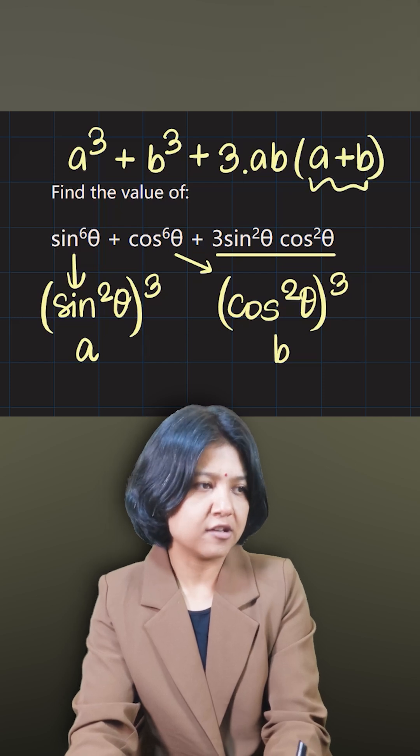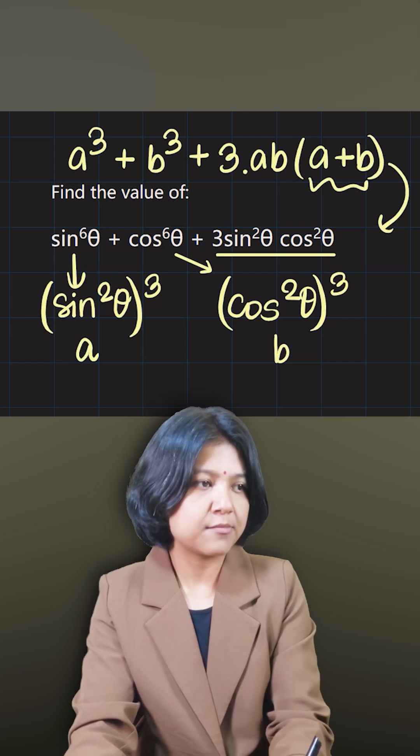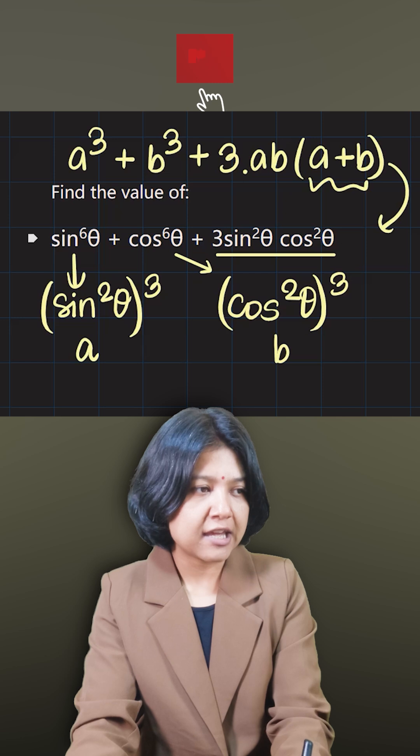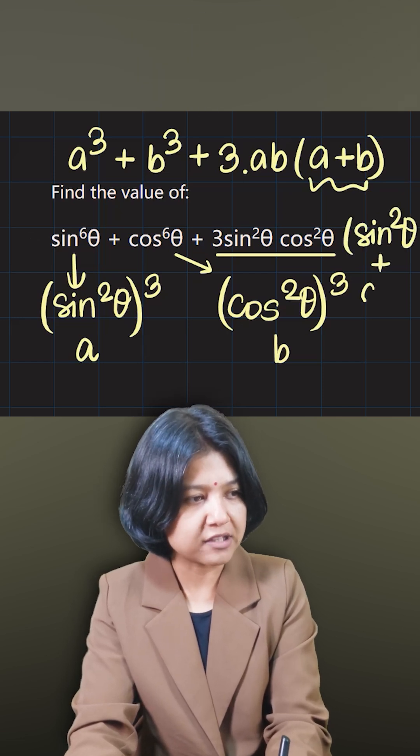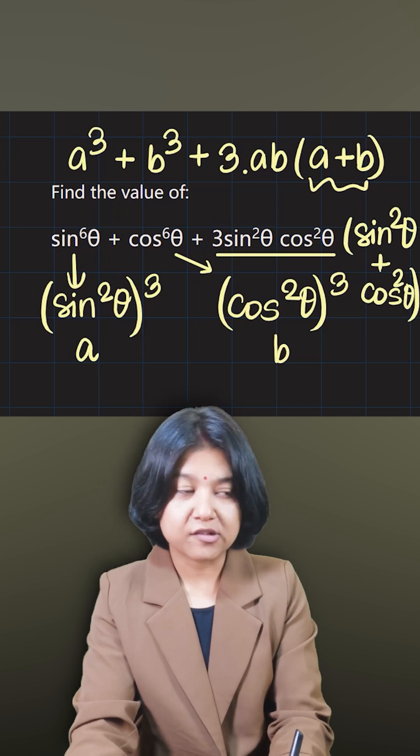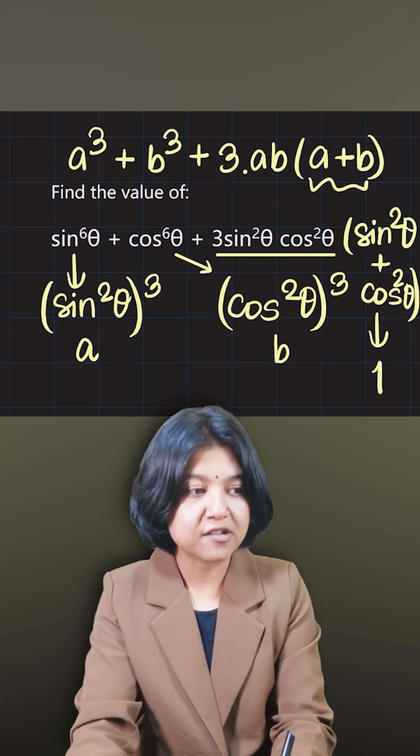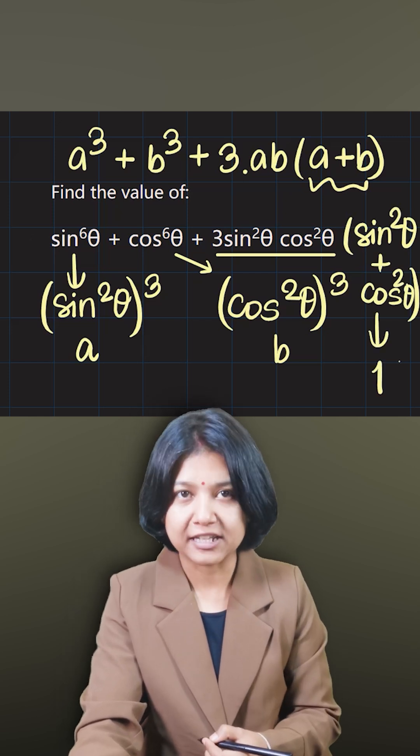I do not see this a plus b thing here. So I can manipulate or I can bring it here if I consider 3ab times a plus b. So I must write sine squared theta plus cos squared theta. So now, sine squared theta plus cos squared theta is 1. That is the reason why the question must have ignored writing that part.